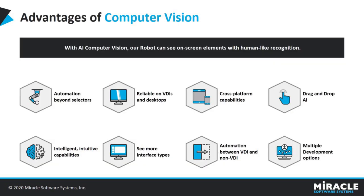Let's see the advantages of Computer Vision. First, automation beyond selectors — robots recognize and interact with more on-screen fields and components, even Flash, PDFs, and images. Second, reliable on VDIs and desktops — it resolves issues with failure-prone image automation techniques and selector-based targeting. Third, cross-platform capabilities — supports automation on Windows, Linux, Android, and other operating systems.